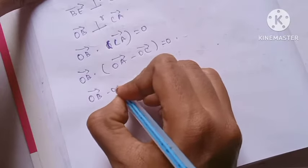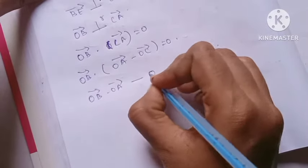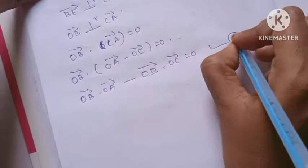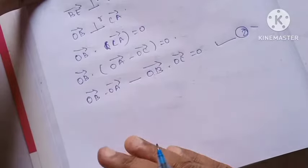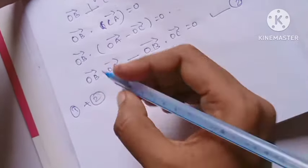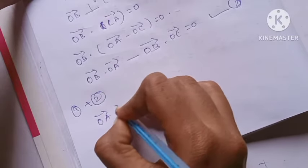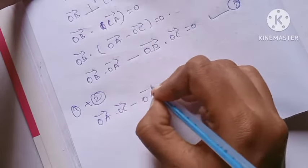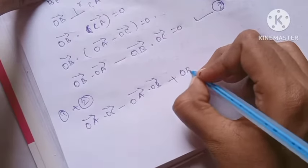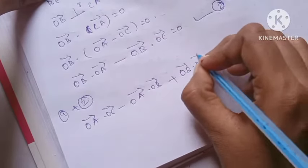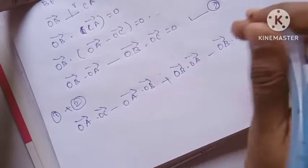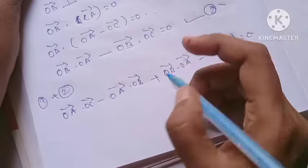OB vector dot OA vector minus OB vector dot OC vector equals zero. This is equation 2. Now add equation 1 and equation 2: OB vector dot OC minus OA dot OB vector plus OB dot OA minus OB dot OC.